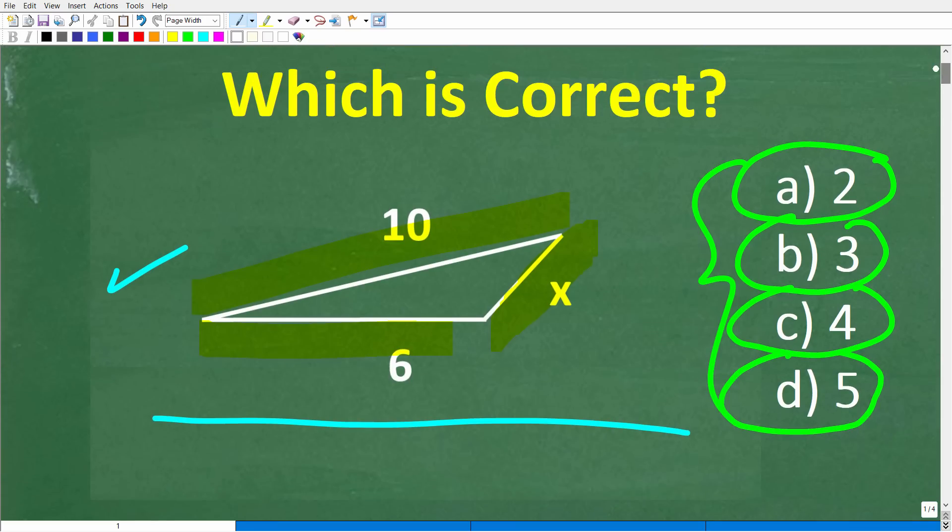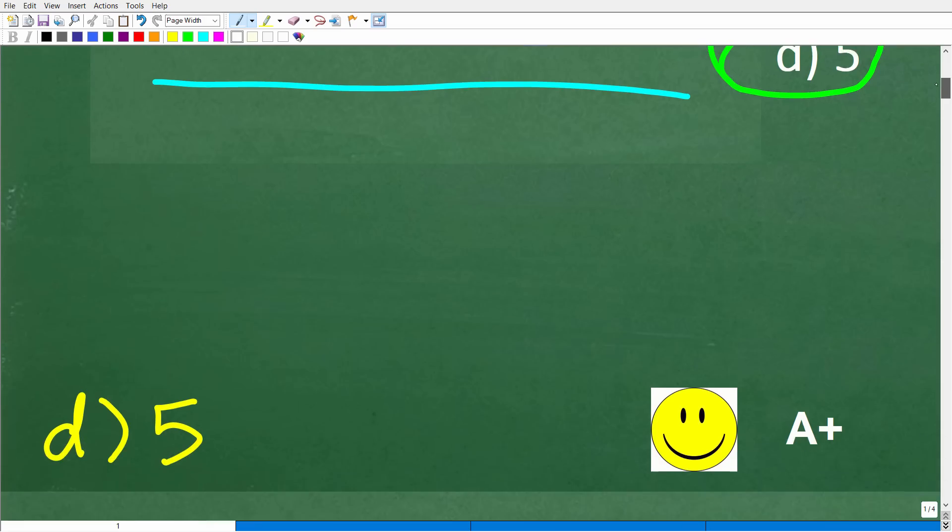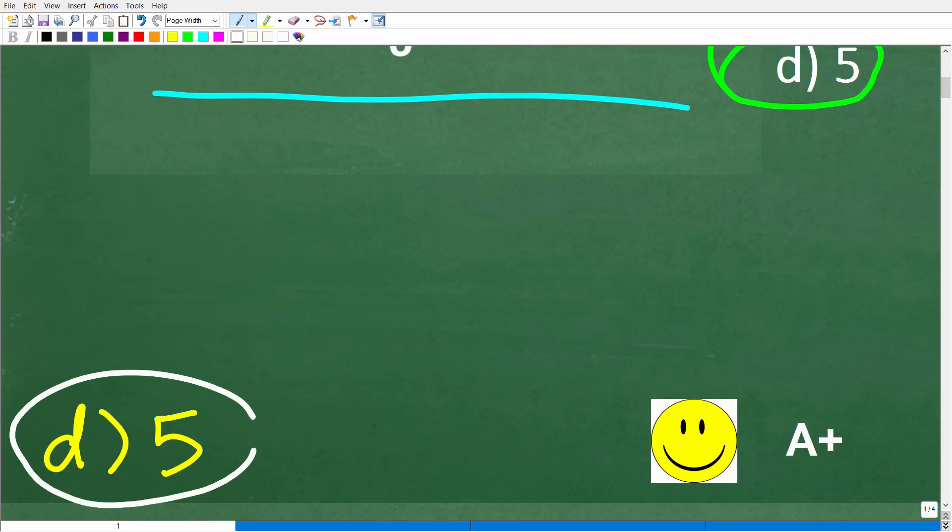All right, so once again, we're trying to determine the missing length. The way I'm going to solve this problem may shock some of you here. We're not going to be doing a lot of math, but let's take a look at the solution. The solution is D, which is 5.